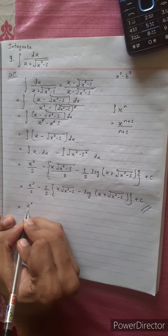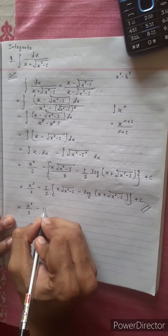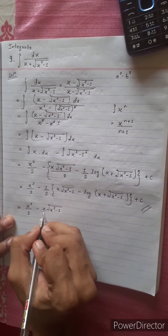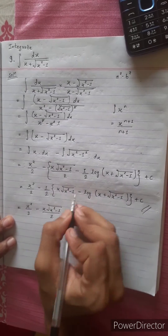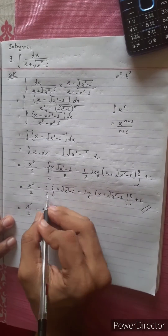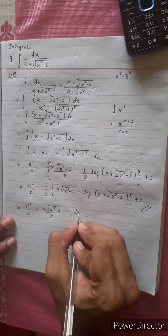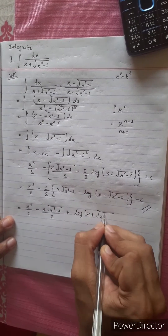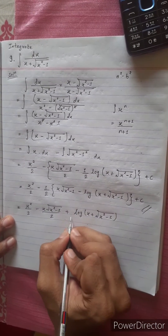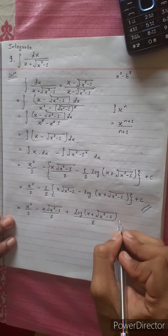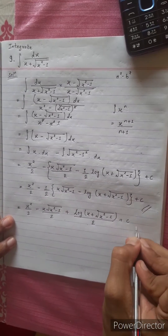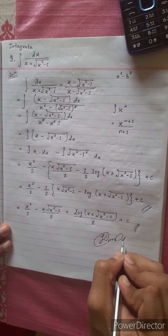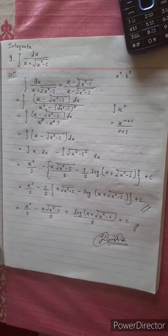x squared by 2 minus x under root x squared minus 1, this is partially multiplied by 2, divided by 2, plus log x plus under root x squared minus 1 divided by 2, plus c. Yes, this matches the book answer. All the questions are done. See you next time.